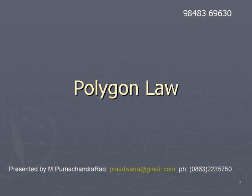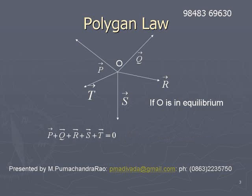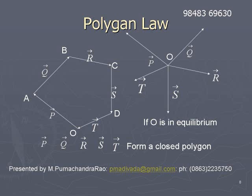Polygon law. If a number of vectors are represented at a point O and their vector sum is 0, or if O is in equilibrium under the action of several forces P, Q, R, S, T, then we can form a closed polygon by representing these vectors by the sides of a polygon taken in order.